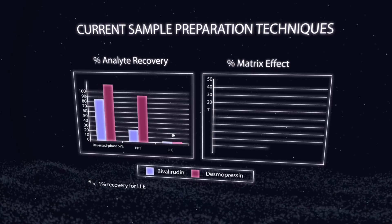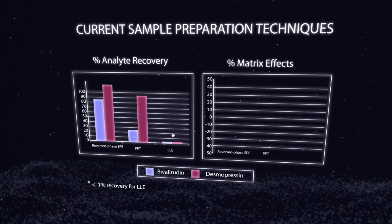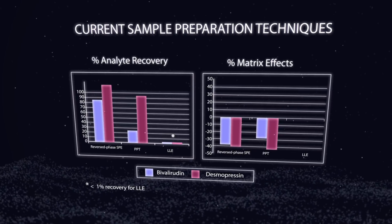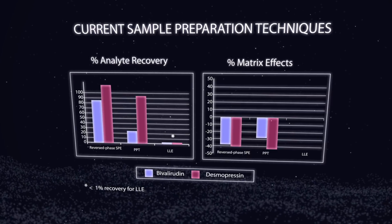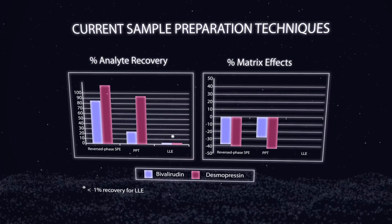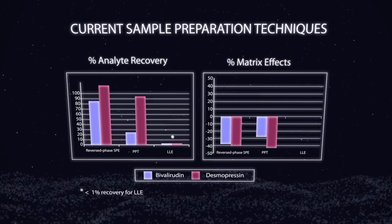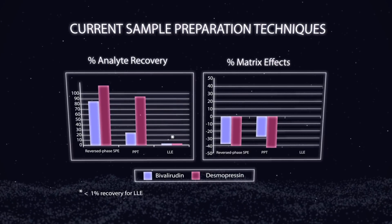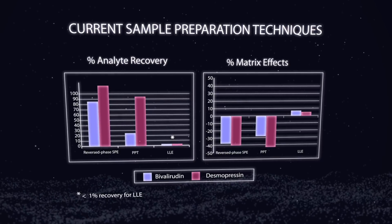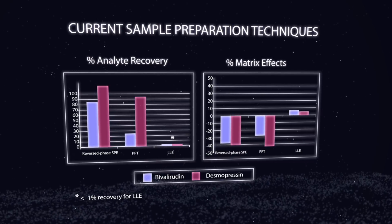Now for matrix effects — that's where things get interesting. Even for desmopressin, where we had decent recovery with reverse phase and protein precipitation, the matrix effects are way higher than the 15% threshold we were looking for. For bivalirudin as well, we have a lot of ion suppression. Liquid-liquid extraction had very little matrix effects, but remember, we had less than 1% recovery, so that's not going to work either.